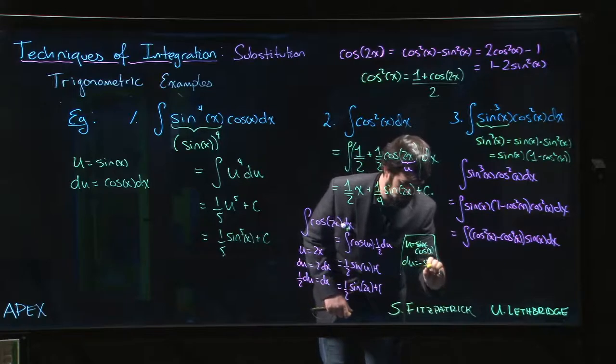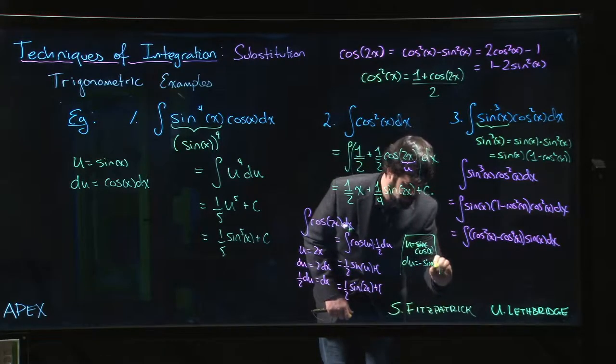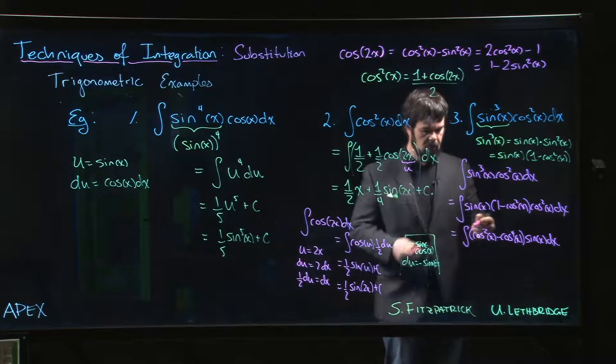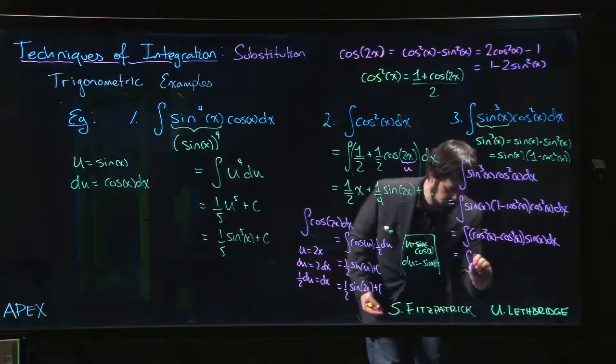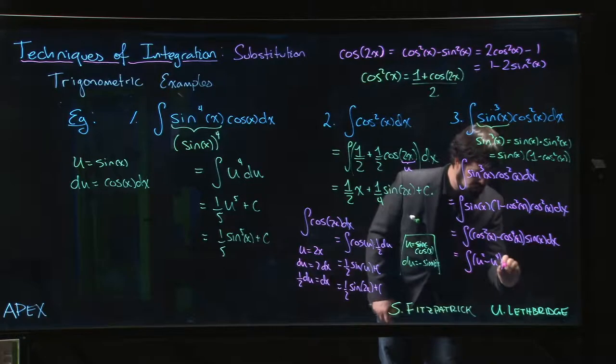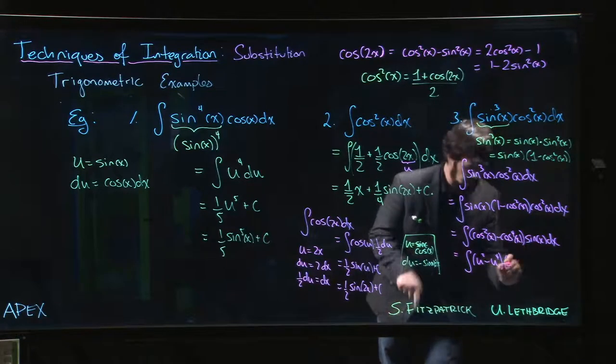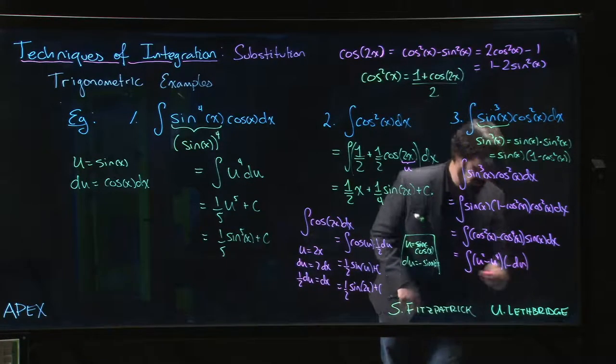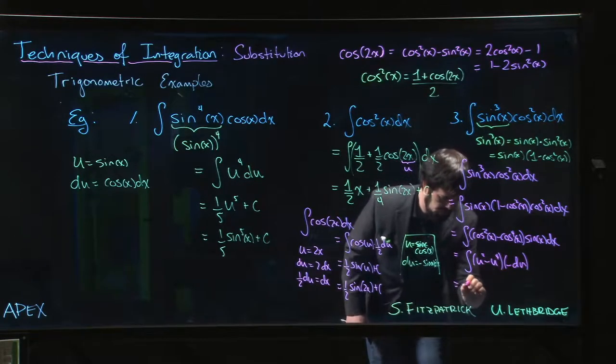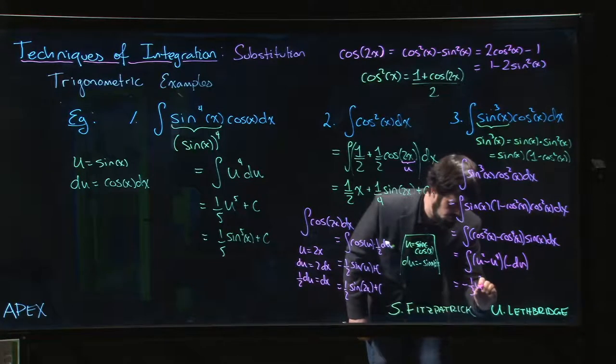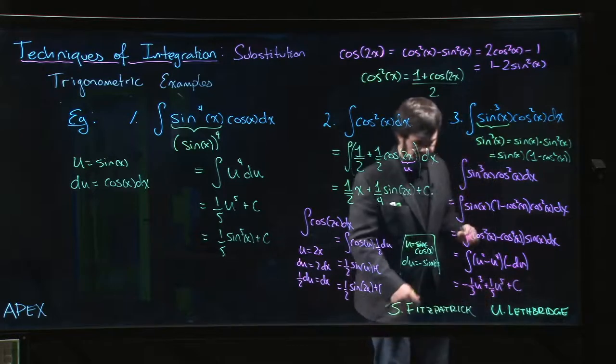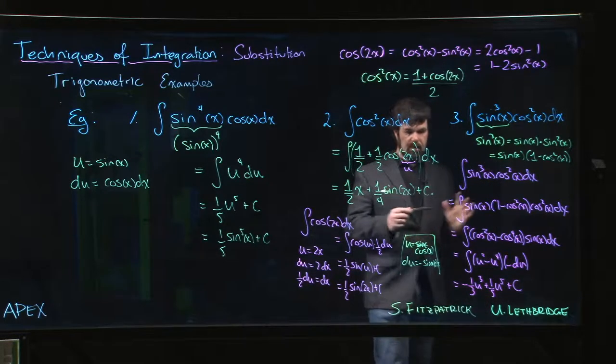du will be minus sine x dx. And if we put all that in, what we're going to get is u squared minus u to the fourth times minus du. So I get minus one third u cubed plus one over five u to the five plus c.